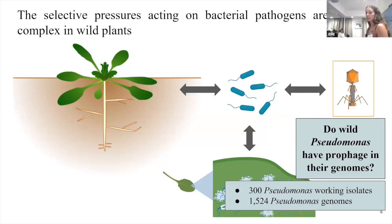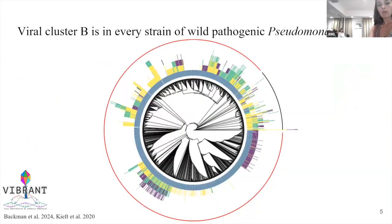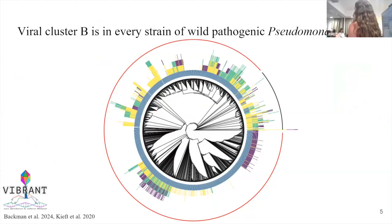In our lab we have over 300 working isolates from these natural populations and have sequenced over 1,500 of these Pseudomonas genomes, 1,300 of which were determined to be pathogenic and about 200 were commensal. I annotated the viral sequences within the 1,500 Pseudomonas genomes with VIBRANT. This is looking at any of the viral sequences within the genome, such as a prophage.